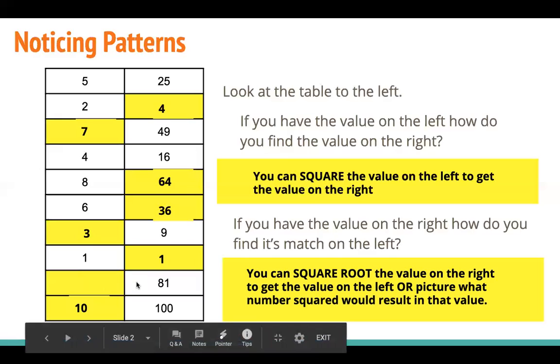Picture what number squared. So what would this last entry be for 81? It's 9, because the square root of 81 is 9, and also it's 9 times 9. 9 squared gets me to 81.